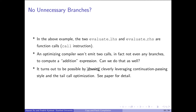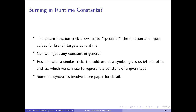Another issue is that in the above example the control flow we generate is really bad: the two evaluate_LHS and evaluate_RHS calls are function calls, so they are call instructions. An optimizing compiler would not emit those calls — in fact, it wouldn't emit any branches to compute this addition expression. It turns out that we can achieve this by cleverly leveraging continuation passing style and tail call optimization. The external function trick also allows us to inject values for branch targets at runtime. For injecting arbitrary constants, the address of a symbol gives us 64 bits that we can use to represent a constant of a given type.